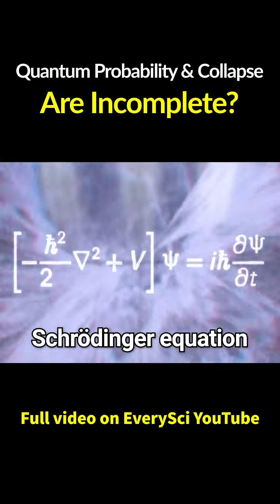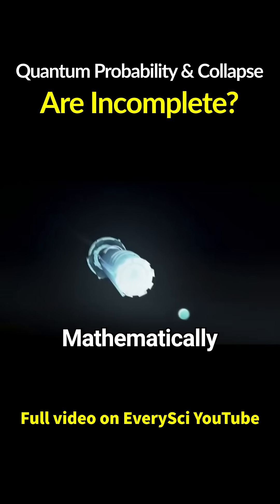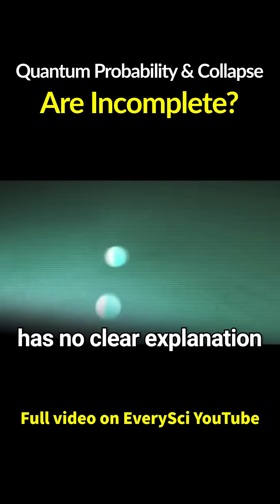Nowhere in the Schrodinger equation does this collapse actually appear. Mathematically, this sudden shift has no clear explanation.